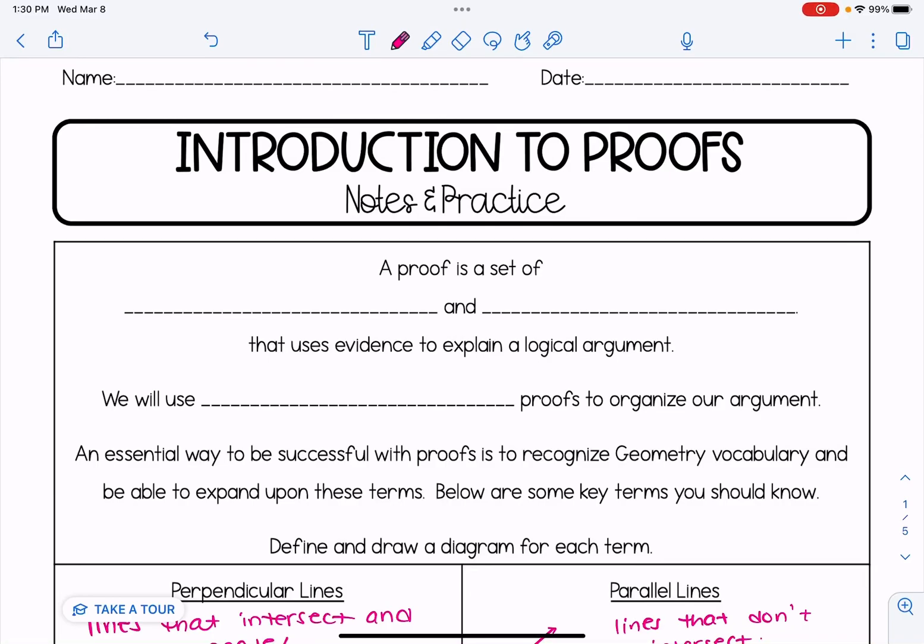This video is an introduction to congruent triangle proofs. A proof is a set of statements and reasons that uses evidence to explain a logical argument. Much like we might think about a lawyer trying to prove his case in court, a proof in geometry is similar where we're arguing and using evidence.